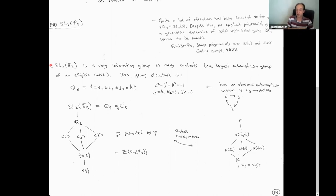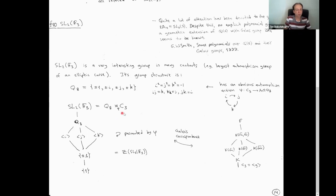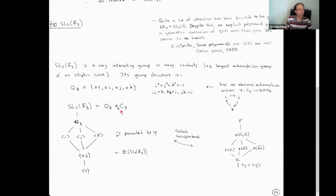The way most people think of this group is as a semi-direct product of Q8 by C3. It's a semi-direct product of a group by a group, but in this case this group here is not abelian, and that makes all the difference. Nevertheless, what we're going to prove is that in this case you can solve the embedding problem and lift any C3 extension to an SL2(F3) extension, and along the way construct a regular SL2(F3) family.